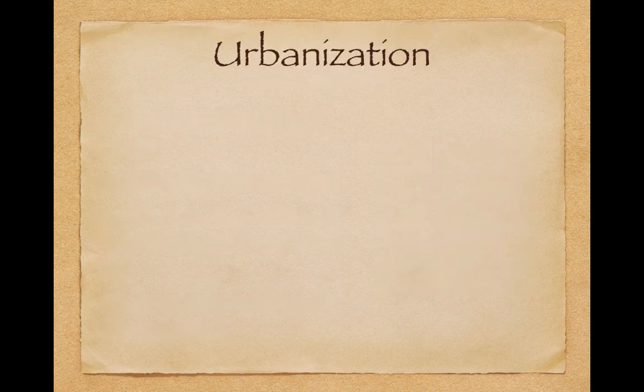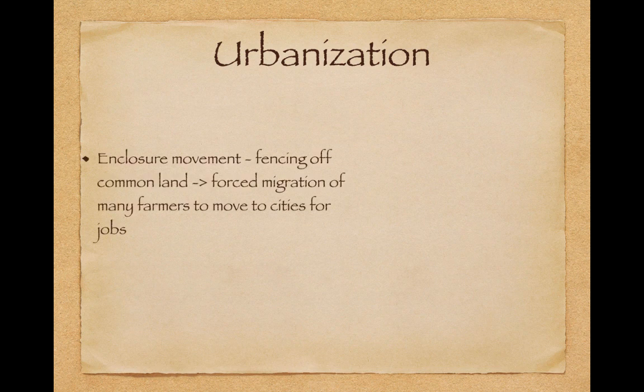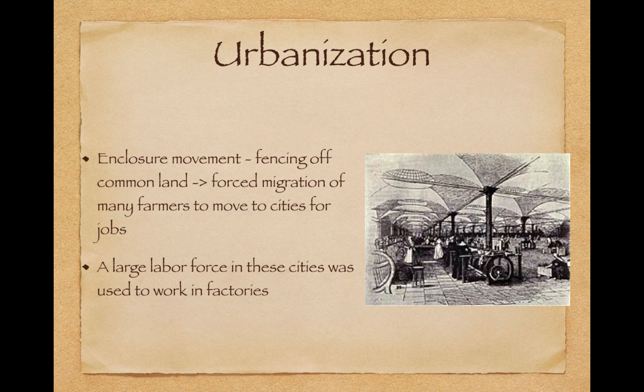Urbanization occurs as a result of the Industrial Revolution, due in large part to the enclosure movement, which is when the government fenced off common land. It forced the migration of many farmers to cities for jobs. A lot of farmers could not afford to buy their own land, so this land was sold to wealthy individuals. With less land available, many moved to cities to work in factories, providing a large labor force.